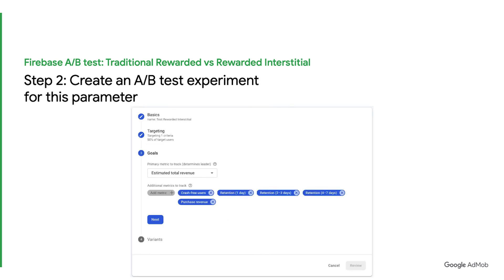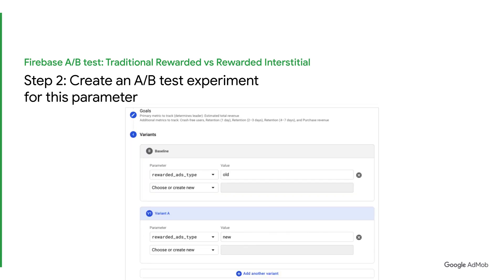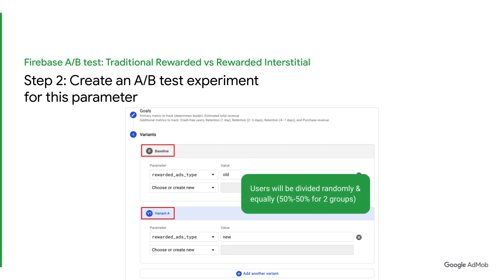Next, select the goal for your experiment. You can choose estimated total revenue if you have linked Firebase and AdMob and Google Play. You can also consider testing crash rate as an additional metric since it's a new API configuration. Retention is another good metric to test if you want to determine whether the opt-out model will affect the overall user experience. Next, create variants for your experiment. The baseline section refers to the default group who uses traditional rewarded ads. The variant A section will be the new group who uses rewarded interstitial. Note that users here are divided randomly and equally — in this case, 50-50 across both groups.